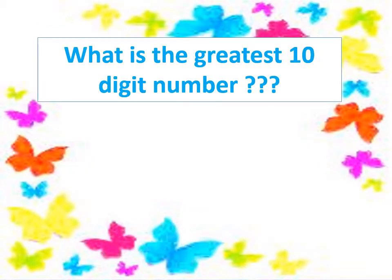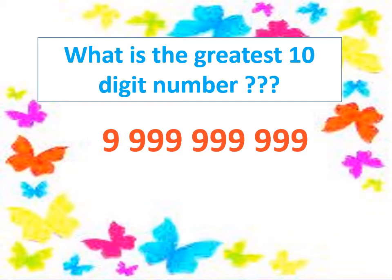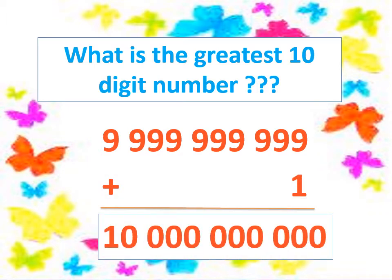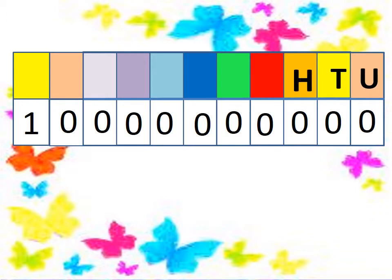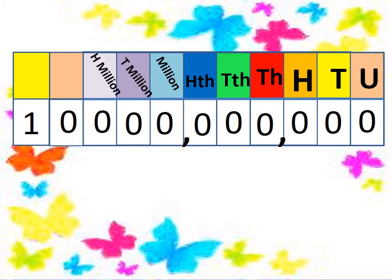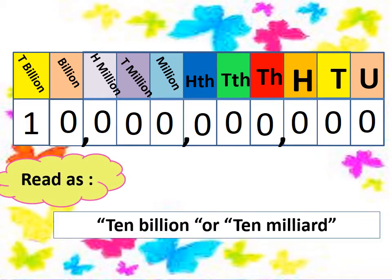Now, can you tell me what is the greatest ten-digit number? Yes — nine billion, nine hundred ninety-nine million, nine hundred ninety-nine thousand, nine hundred and ninety-nine. If we make plus one, we get a number with eleven digits. The place values are: unit, tens, hundreds, thousands, ten thousands, hundred thousands, million, ten million, hundred million, billion, and the new digit is ten billion.